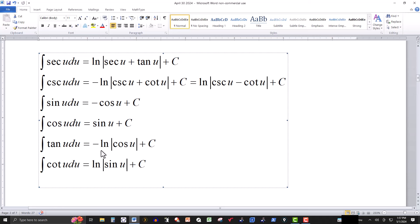There could be more than one form of these formulas. For example, the integral of cosecant of u du is equal to minus the natural log of absolute cosecant of u plus cotangent of u plus the constant of integration. But you can also write it in this form using properties of logs.